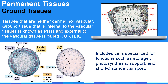Ground tissues are tissues that are neither dermal nor vascular. Ground tissue internal to the vascular tissues is known as pith, and external to the vascular tissue is called cortex. This includes cells specialized for functions such as storage, photosynthesis, support, and short distance transport.